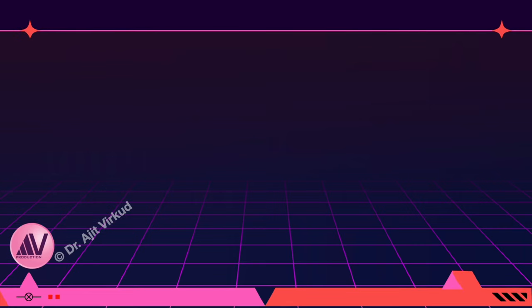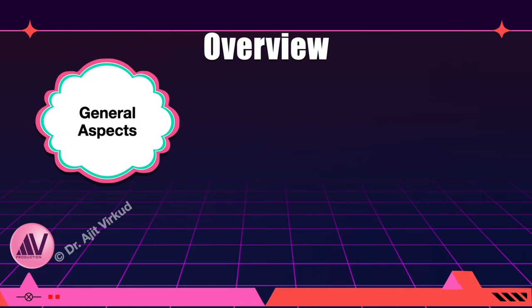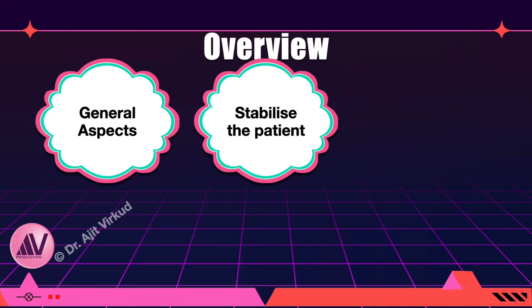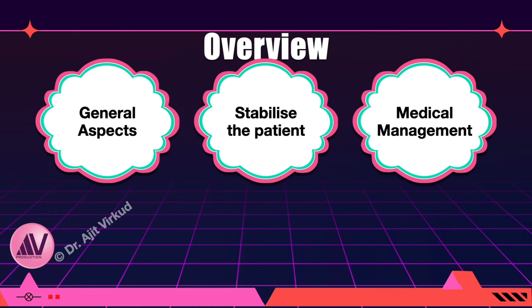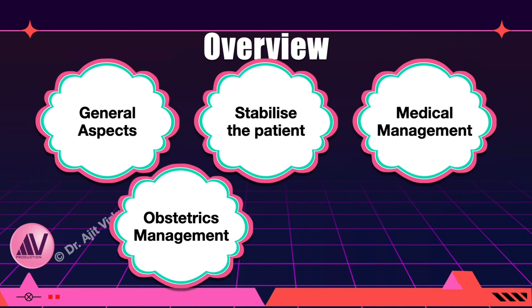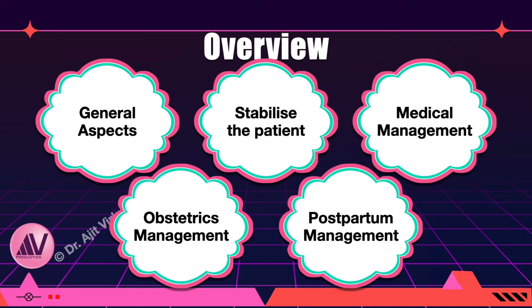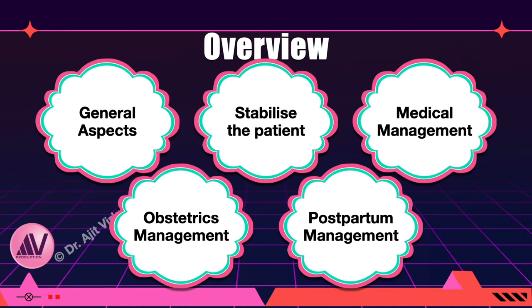To give you an overview, I will be discussing the topic under the following sections: Step 1 — general aspects of eclampsia; Step 2 — stabilizing the patient in a primary and then tertiary care setting; Step 3 — medical management, comprising control and prevention of seizures and management of hypertensive crisis; Step 4 — obstetric management of eclampsia; and Step 5 — postnatal management of eclampsia.